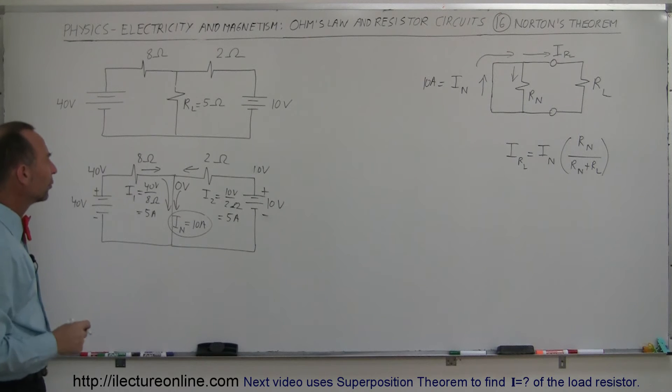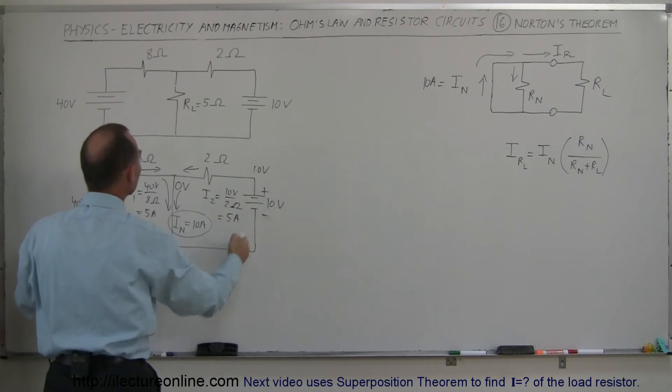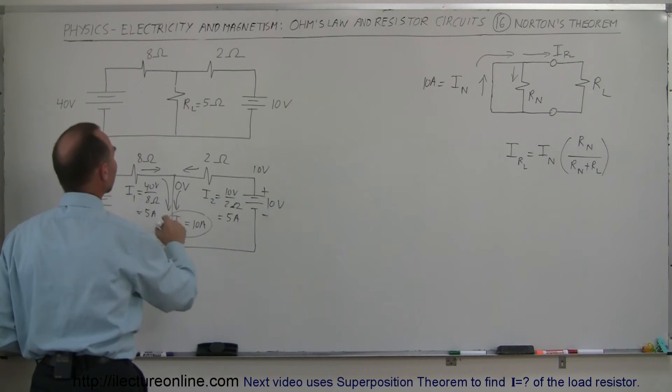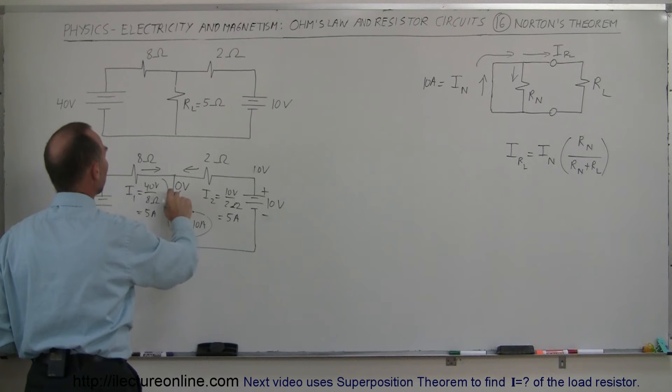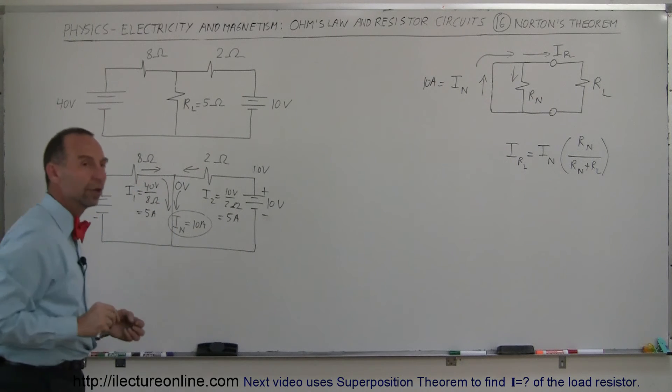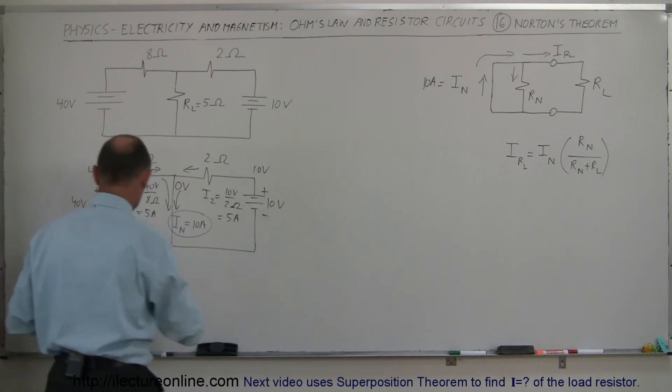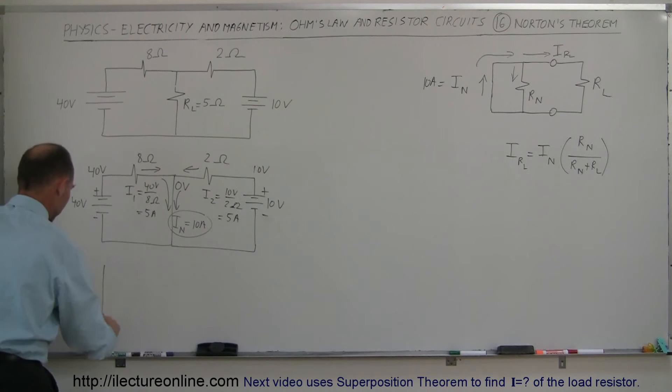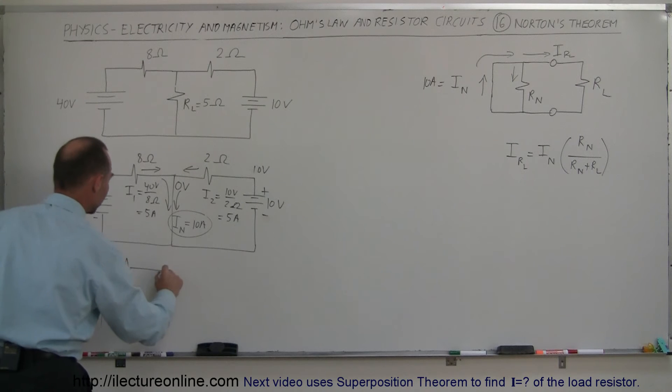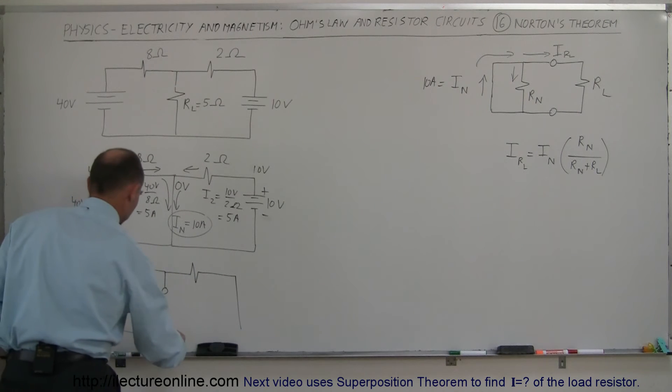Then the next thing we're going to do is we're going to go ahead and short out the batteries and then find the equivalent Norton resistance. So we're going to open the circuit up, take out the load resistor and find the equivalent Norton resistance of that circuit. So we short out the batteries, we still have this resistor. We're going to open this up now. The load resistor is removed.